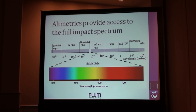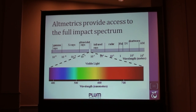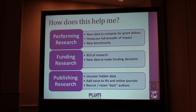One way I like to think of it is: the citations, the way we've been doing it, is the visible light part of the spectrum — it's what we've had for decades to go on. But the full impact spectrum is much wider. This gives us an idea of different ways to measure it. We're expanding to see the other side of the spectrum.